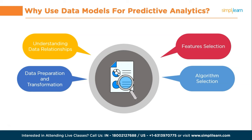Predictive analytics is also extensively used in sales and marketing. Predictive analytics plays a crucial role by providing invaluable insights and helping organizations make data-driven decisions. Predictive analytics models analyze historical sales data, market trends, customer behavior, and external factors to forecast future sales, which in turn helps organizations plan their resources, set realistic sales targets, and allocate budgets effectively. In manufacturing and supply chain management, predictive analytics helps optimize production processes, predict equipment failures, and manage supply chain logistics. By analyzing historical data and real-time information, manufacturers can improve operational efficiency, reduce downtime, and optimize inventory levels.